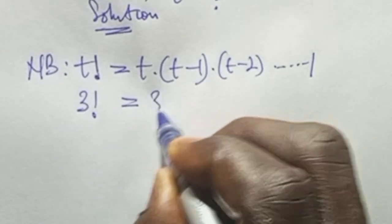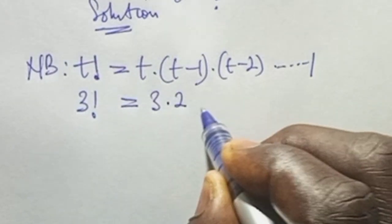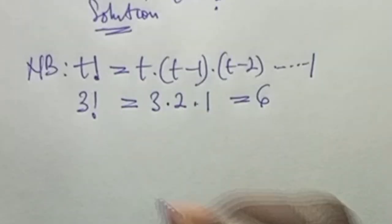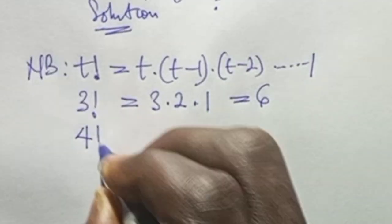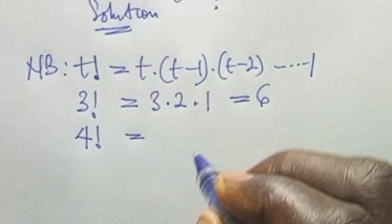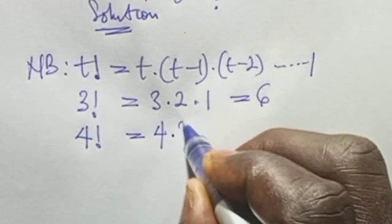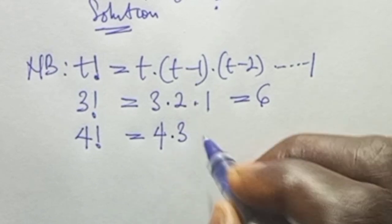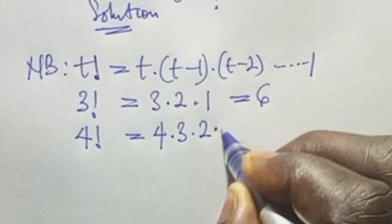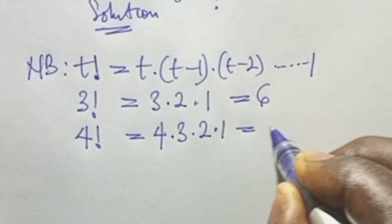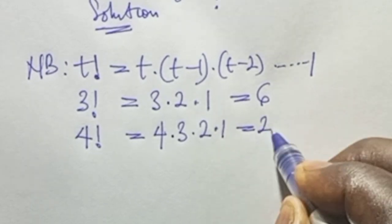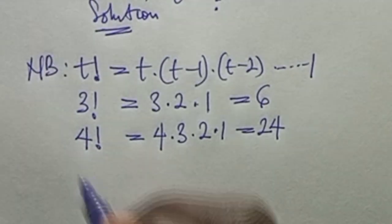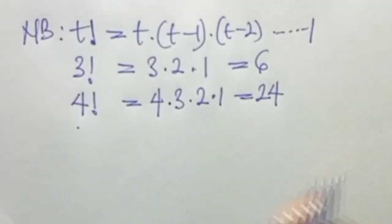For example, 3 factorial is written as 3 times 2 times 1, which equals 6. A further example: 4 factorial equals 4 times 3 times 2 times 1, and if you do this multiplication it gives us 24.